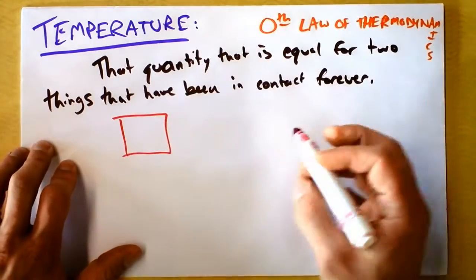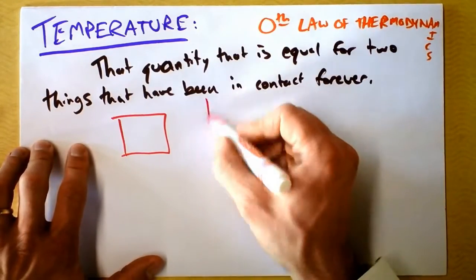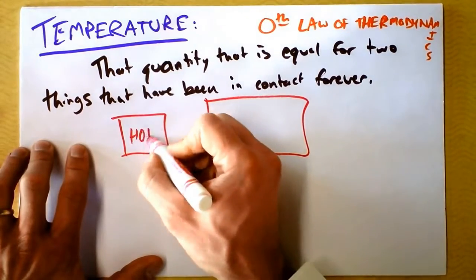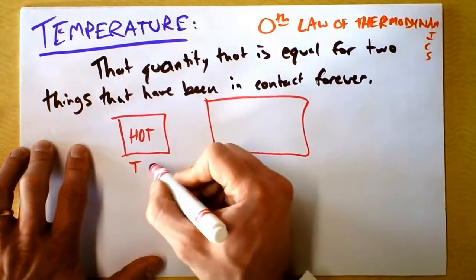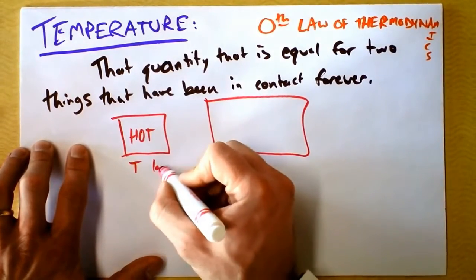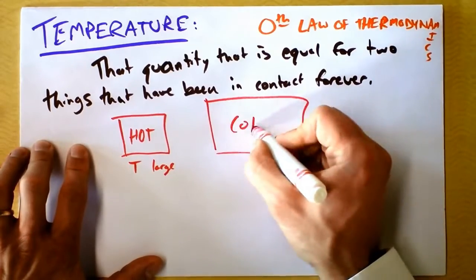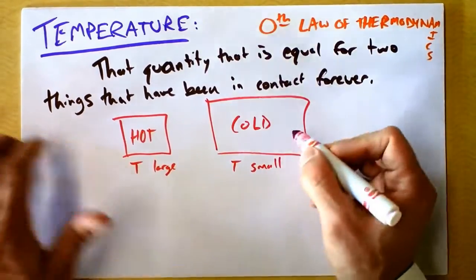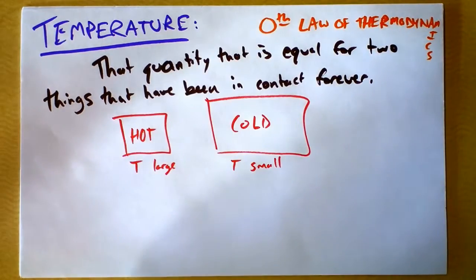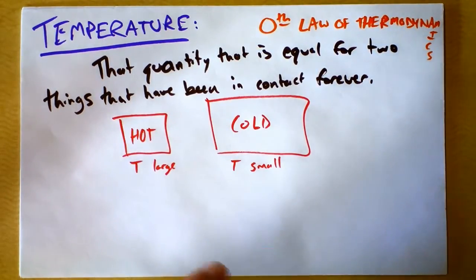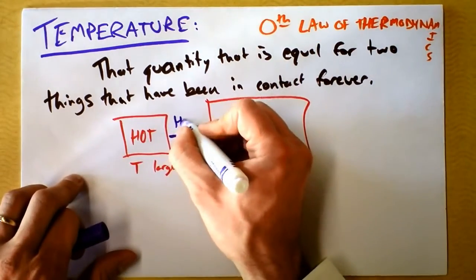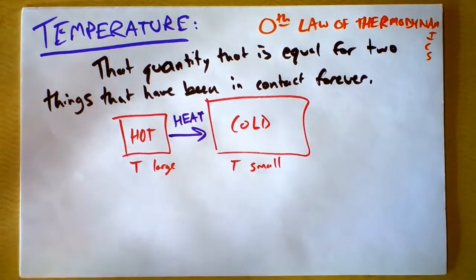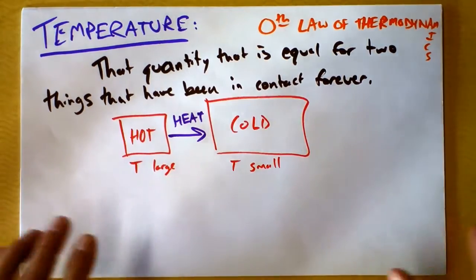So I'll draw a little picture of this. This is a hot thing because it has T large, and this is a cold thing because it has T small, and heat is going to flow from the hot thing to the cold thing. That's our definition of temperature right now.